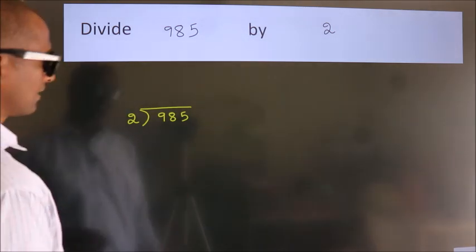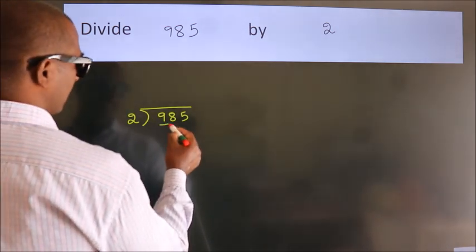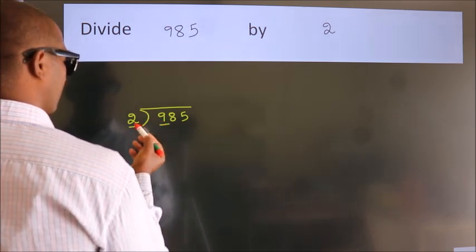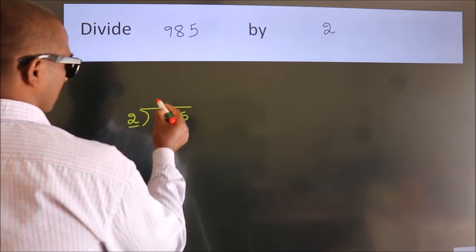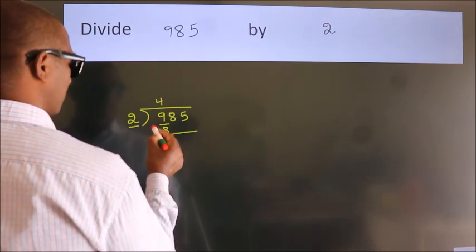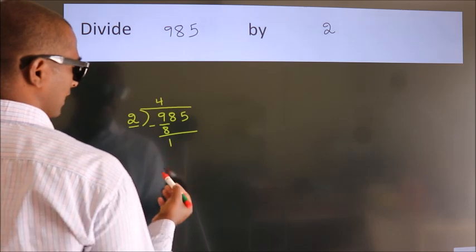Next. Here we have 9. Here 2. A number close to 9 in 2 table is 2 fours 8. Now we should subtract. We get 1.